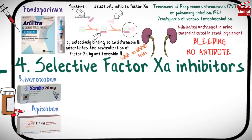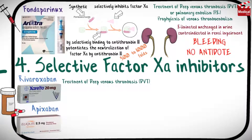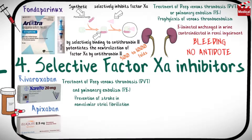Rivaroxaban is approved for treatment and prevention of deep venous thrombosis and pulmonary embolism, and for the prevention of stroke in non-valvular atrial fibrillation. Apixaban is used for stroke prevention in non-valvular atrial fibrillation.